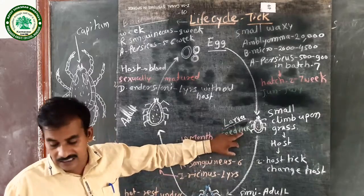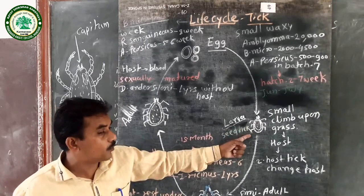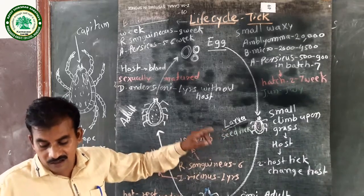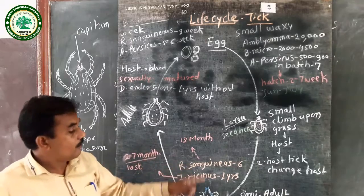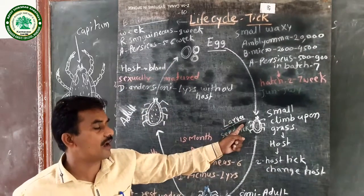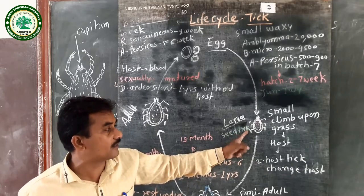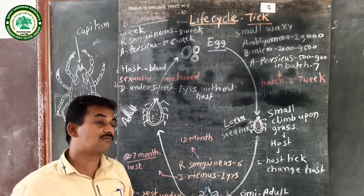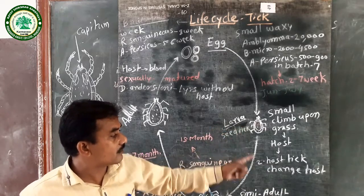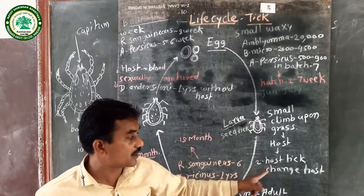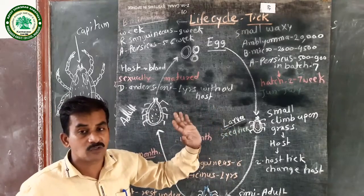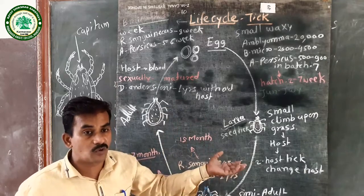After attaching to the first host, they may go on to another host in the next stage. They drop off after fulfilling the blood meal and take shelter in a suitable place, digest the blood meal, undergo the first molting, and emerge as nymphs with four legs. Some species' larvae complete the blood meal, then live away from the host, and again attach to a new host in the next stage.